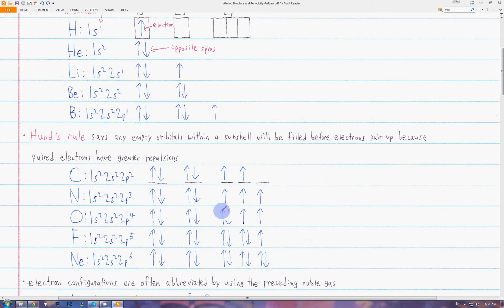Only starting at the fourth electron, here at oxygen, do they start pairing up, because now they have to pair up since all three orbitals in the p subshells are filled by one electron at least. They begin to pair up in the p subshell until we get to neon, which has a full p subshell.